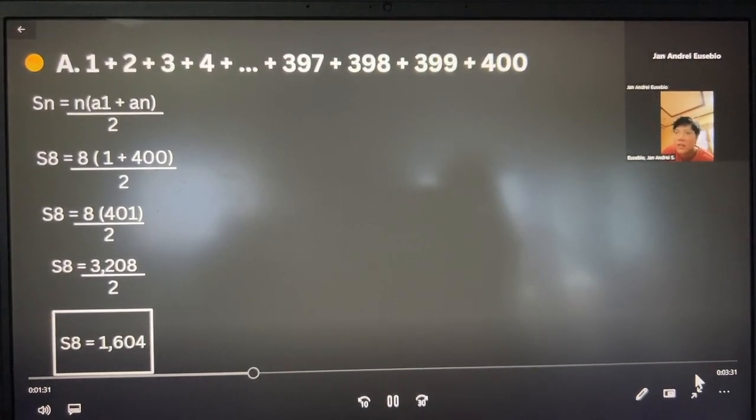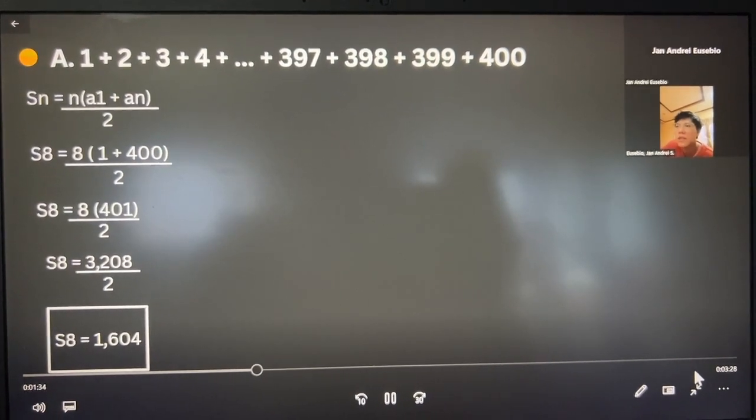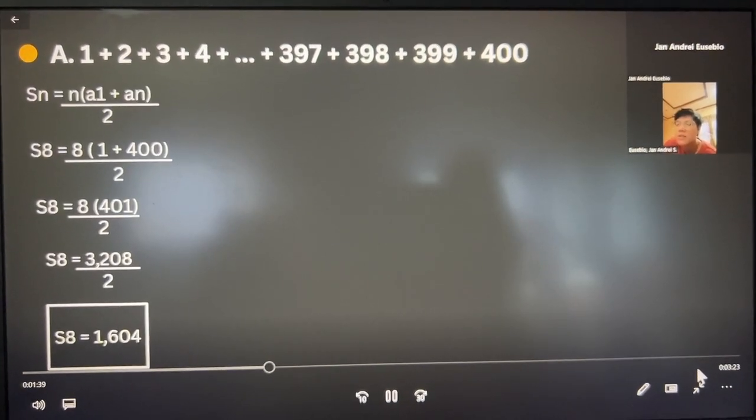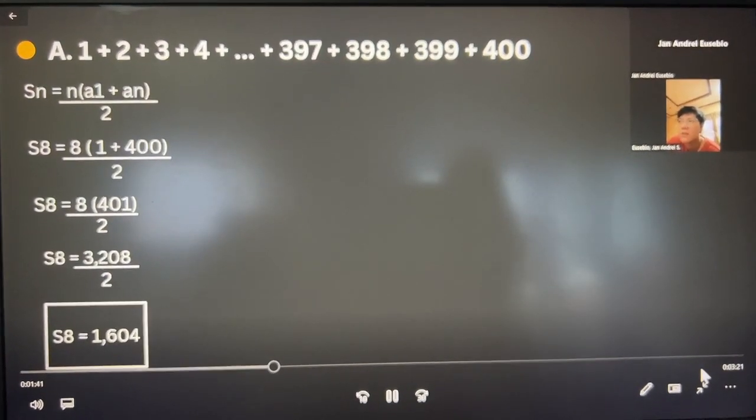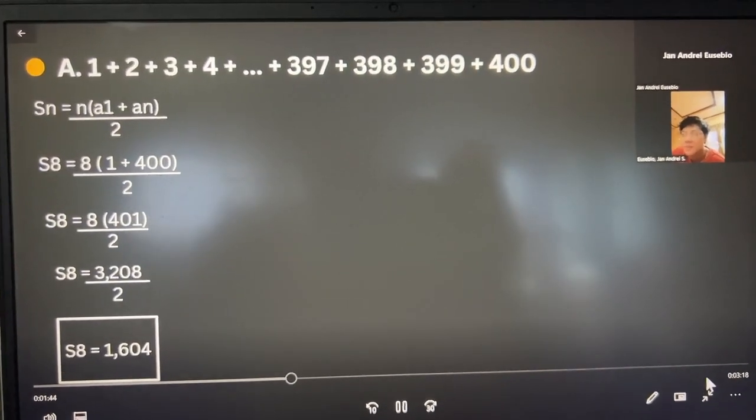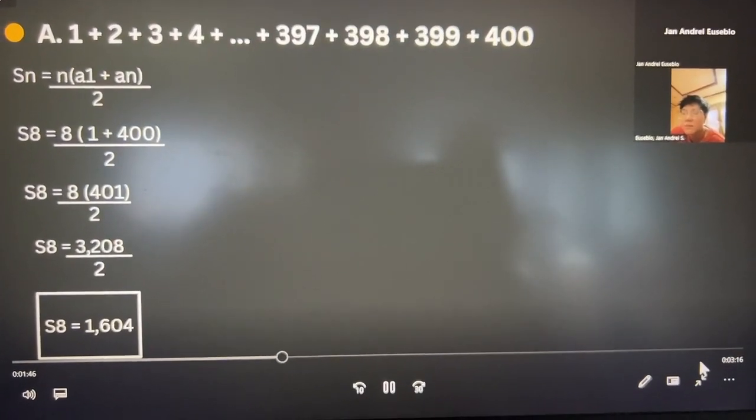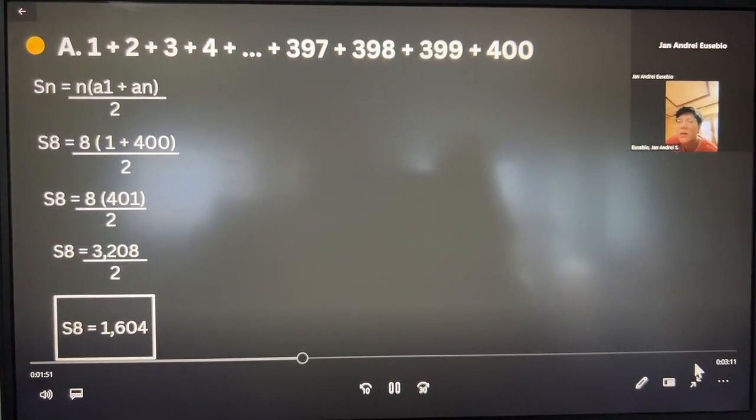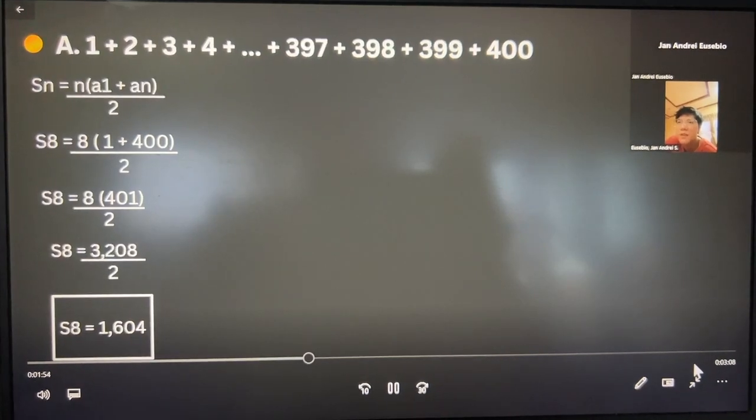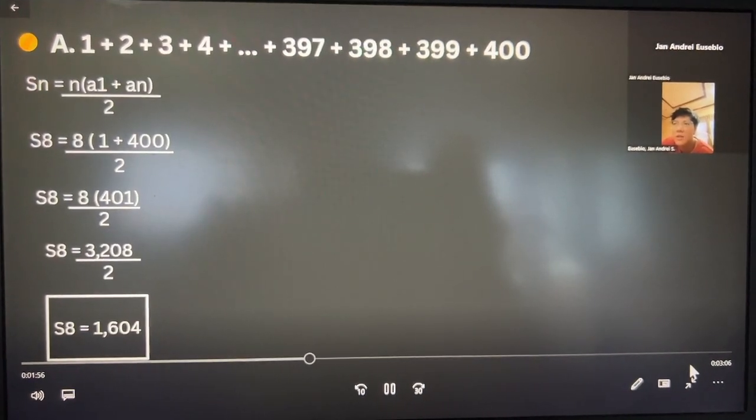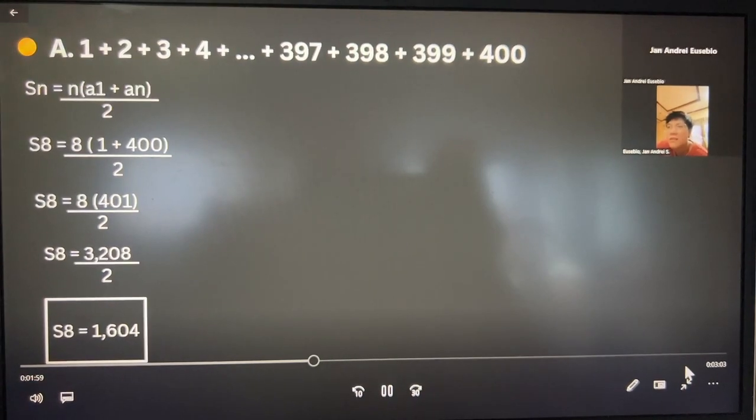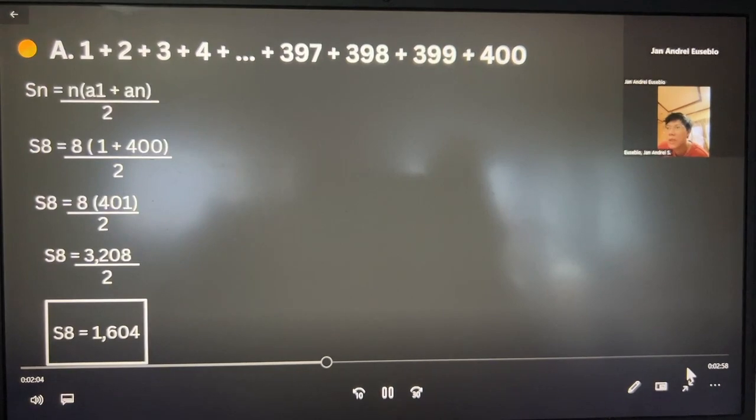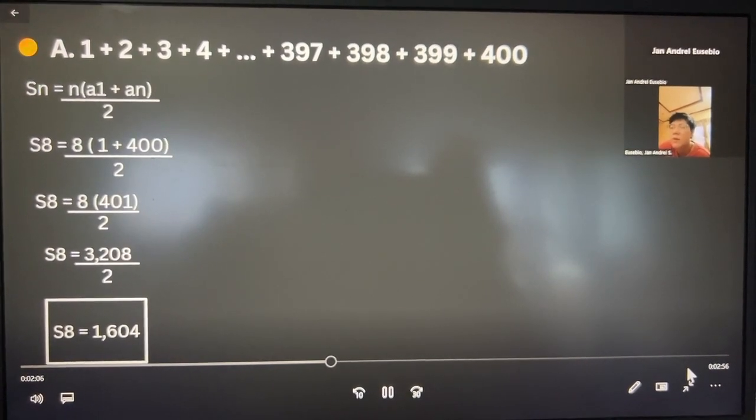8 is 8 because that's the count of ordered numbers that are given to us. So S8 equals 8, in parenthesis bracket, 1 plus 400. 1 because that's the first given ordered number, and plus 400 because that's the 8th position, that's the last one, that's the 8th pattern, over 2.